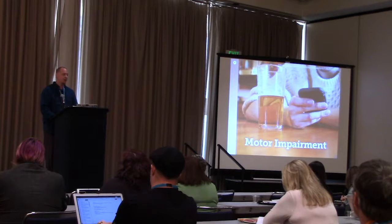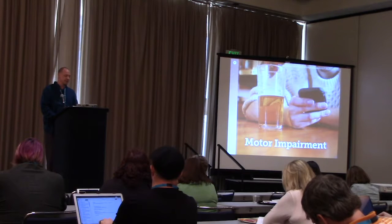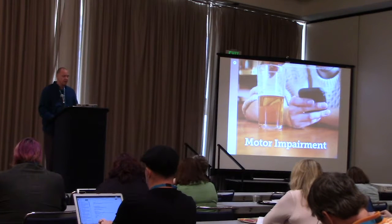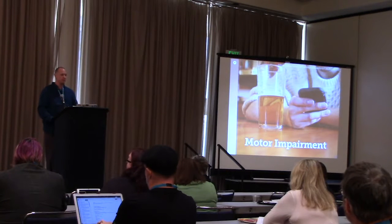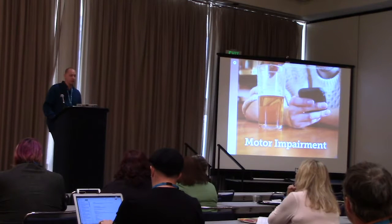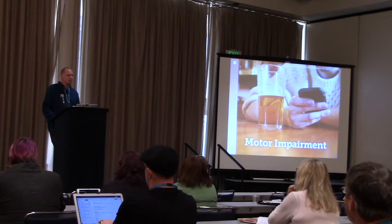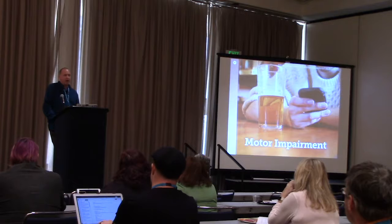The next category is motor impairments. These come in many shapes and sizes — people may have tremors, slowness, Parkinson's, muscular dystrophy, or have had a stroke. But it can also be temporary: being a little drunk means you're not so precise with taps on your phone and you might swipe the wrong direction on Tinder by accident. Exhaustion is another one — I've got two little kids and I surf the web before bed, and my brain and hands are not working at 100%. That's an impairment too.